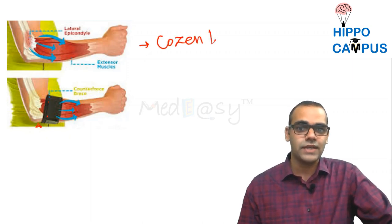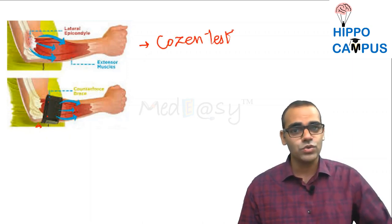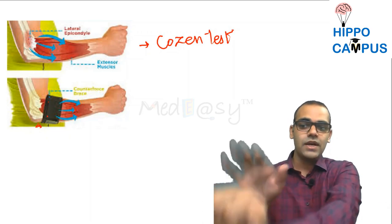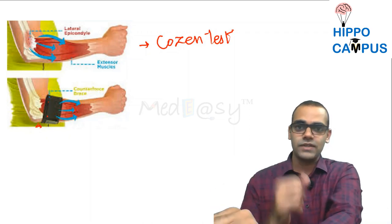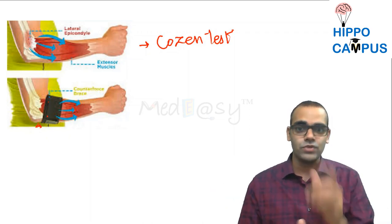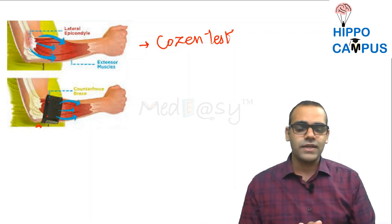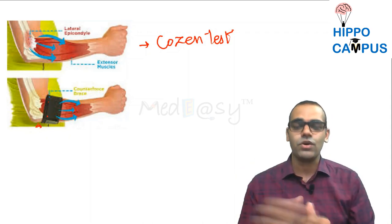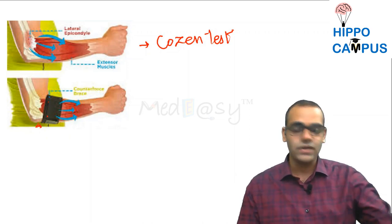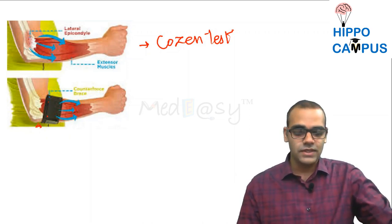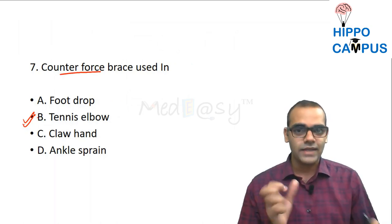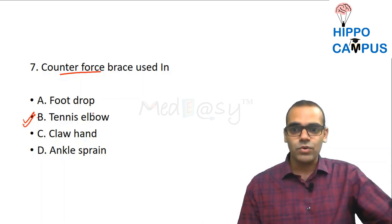The clinical sign for tennis elbow is the Cozen test: ask the patient to extend the elbow and extend the wrist against resistance — this will produce pain at the lateral epicondyle. Treatment starts with NSAIDs; if no relief, a steroid injection or PRP at the lateral epicondyle is given. The counter force brace counters the force generated by the extensor muscles.